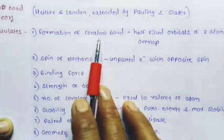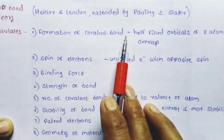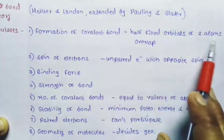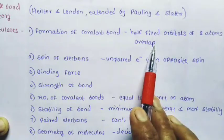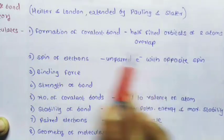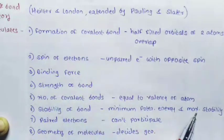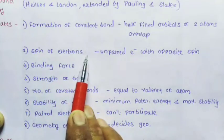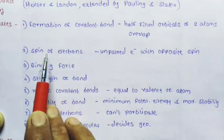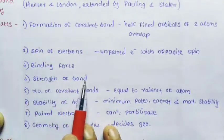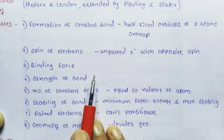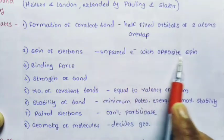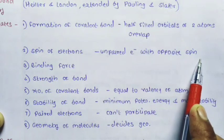First postulate: formation of covalent bond. When half-filled orbitals of two atoms overlap each other, a covalent bond is formed. Second postulate: spin of electrons. In the formation of a covalent bond, there are unpaired electrons with opposite spin.